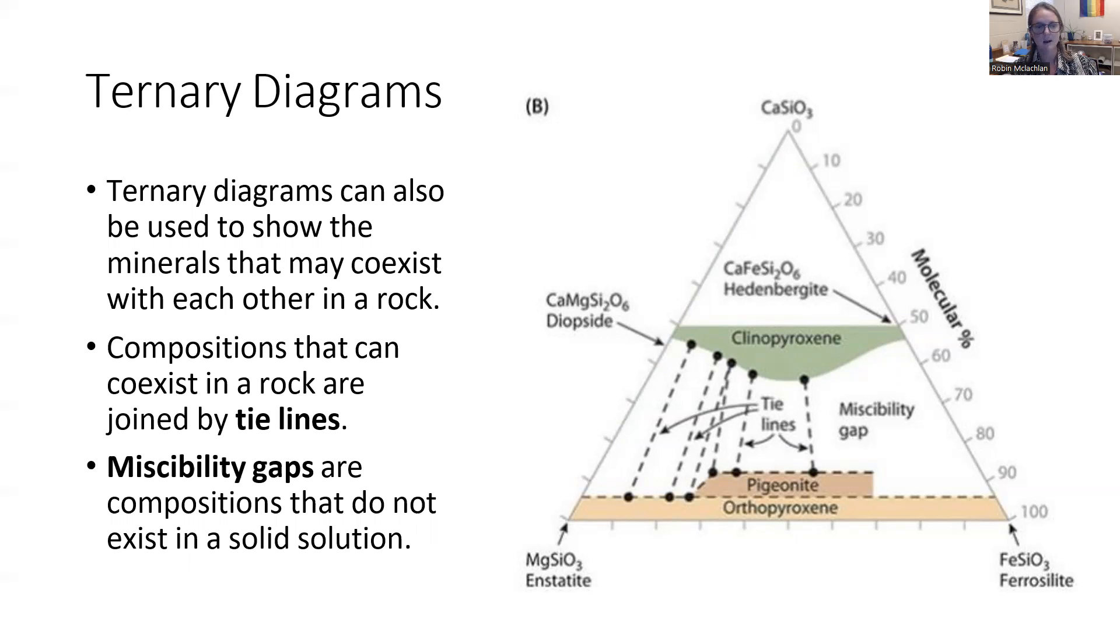So you're never going to find, let's say, 70% forsterite and 20% CaSiO3. Those just don't really mix well together.